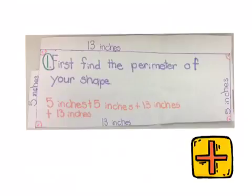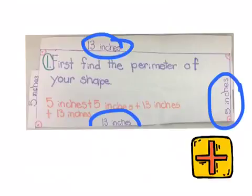First, find the perimeter of your shape. To find the perimeter, we add all the sides: 13 inches plus 5 inches plus 13 inches plus 5 inches.